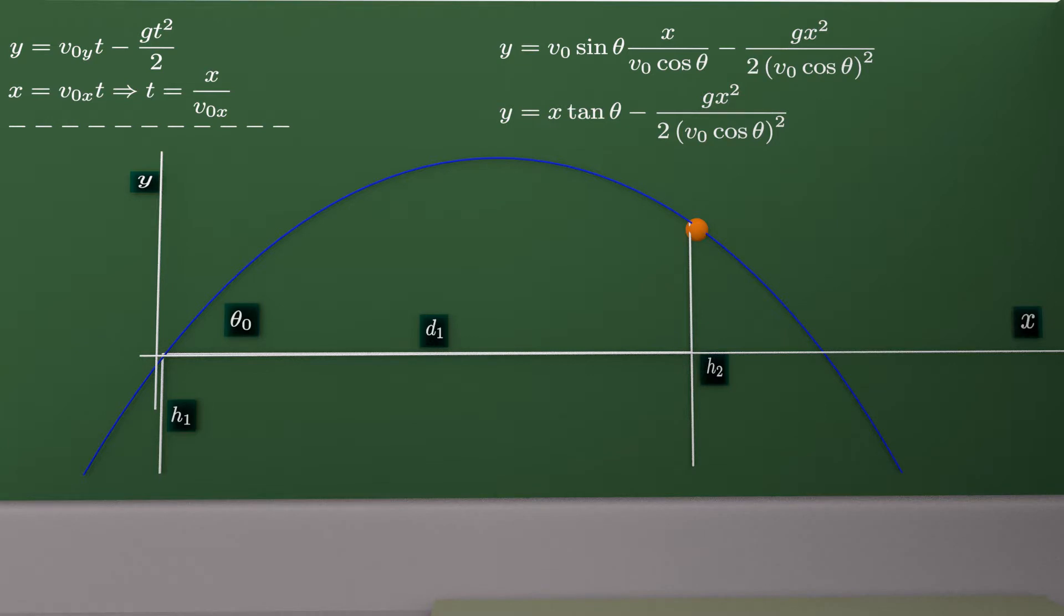We know that such kind of motion can be observed as two one-dimensional motions. In our case, it will be the motion along the y-axis, and it is a motion with acceleration g, and the motion along the x-axis, which is a motion with constant speed.